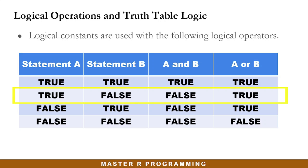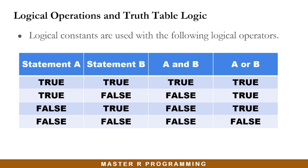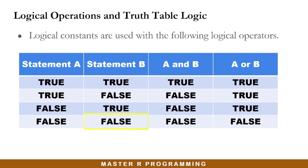In the third row, if statement A is true and B is false, then both of them cannot be true, so A AND B will evaluate to FALSE. But as long as one of them is already true, A OR B is TRUE. In the fourth row, if statement A is false and B is true, then A AND B will evaluate to FALSE. But because statement B is true, A OR B is going to be TRUE. In the last row, if statement A is false and B is false, then both of them will be FALSE, and A OR B is also going to be FALSE.